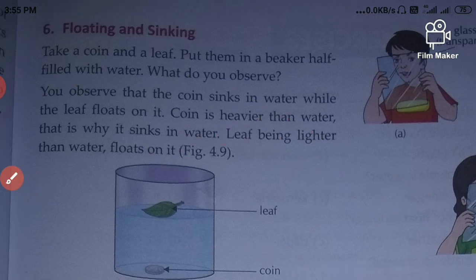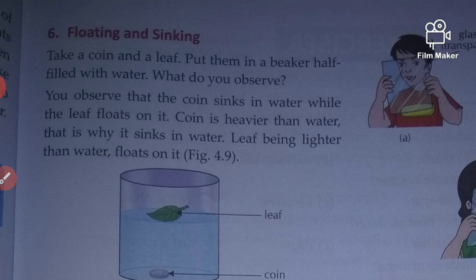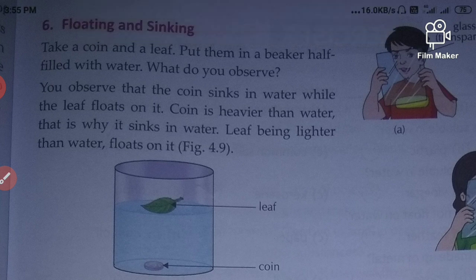For example, you take a coin and a leaf in your home and put them in a beaker half filled with water. So what do you observe? You observe that the coin is heavier than water, that's why it sinks in the water. However, the leaf is lighter than water, that's why it floats on the water.